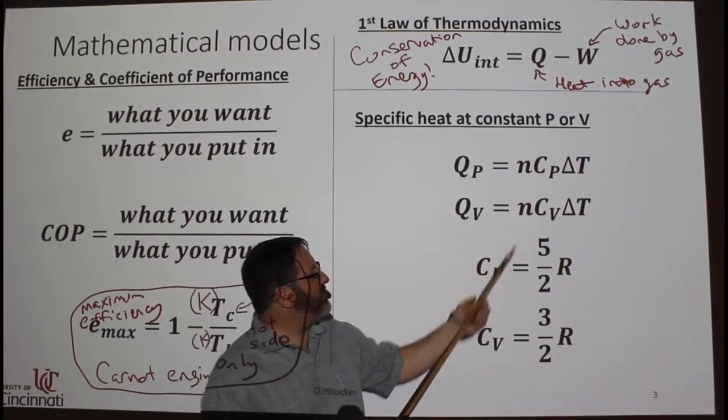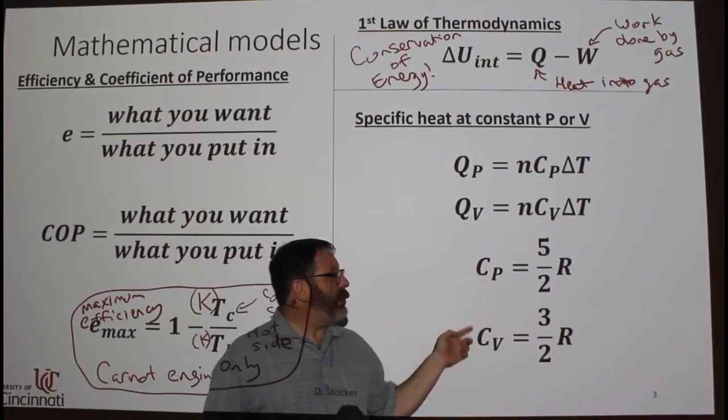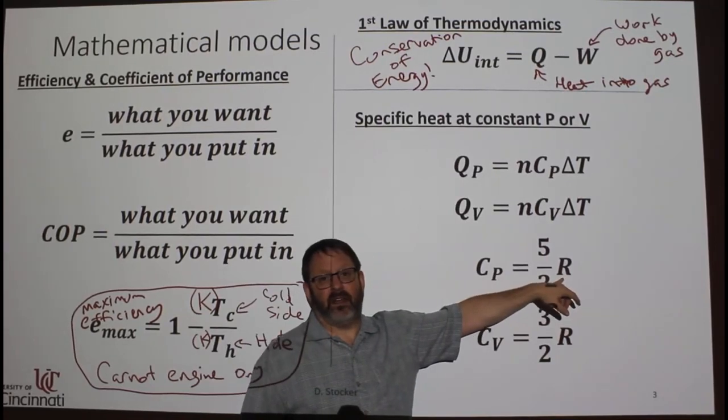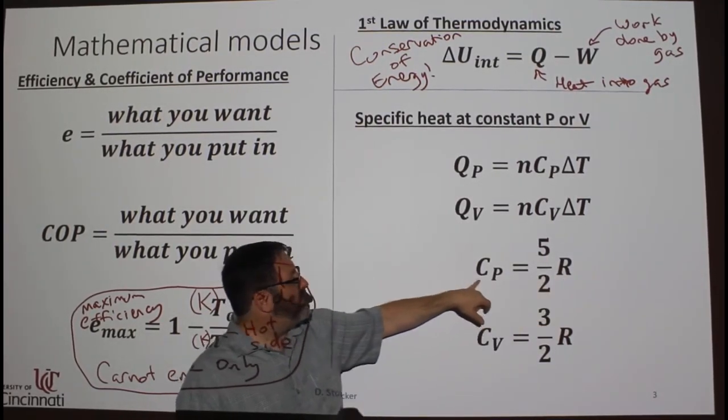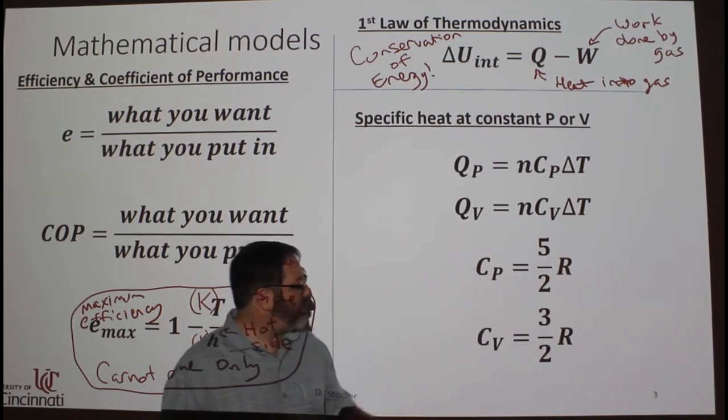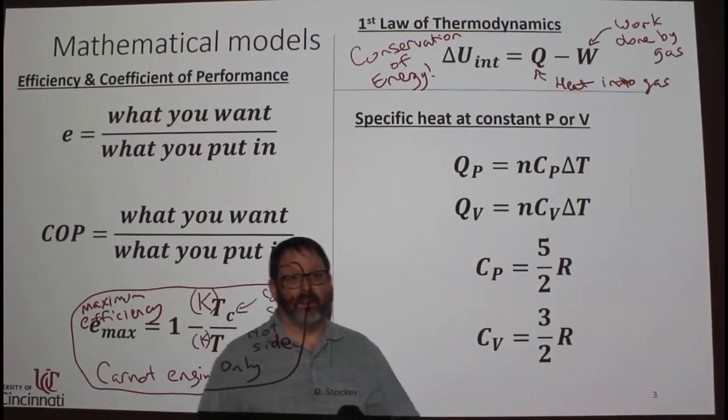What are these CP's and CV's? They're related only to the ideal gas constant. So CP is 5 halves times R, CV is 3 halves times R.